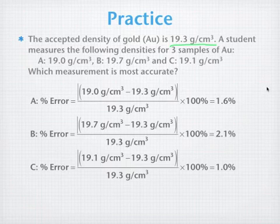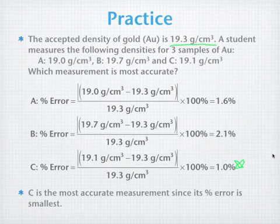Well, we want the one that has the smallest error, and so that means that sample C is the most accurate measurement. Again, its percent error is the smallest. You can also say, just looking at the absolute value of the measurement, that it is the closest to the expected or accepted value.